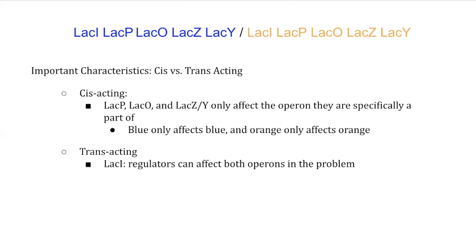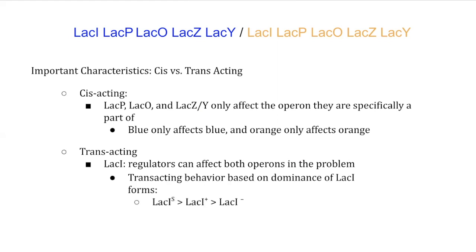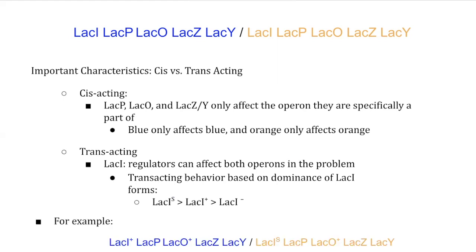On the other hand, the regulator is the only trans-acting component, so it can affect both operons in the problem. What determines this trans-acting behavior is the dominance pattern of the lac regulator forms. A supermutation is dominant to the wild-type, which is dominant to lacI negative. For example, let's say that a blue regulator had the wild-type phenotype and the orange regulator had the supermutation. In this scenario, the orange regulator would be able to bind to both operons.